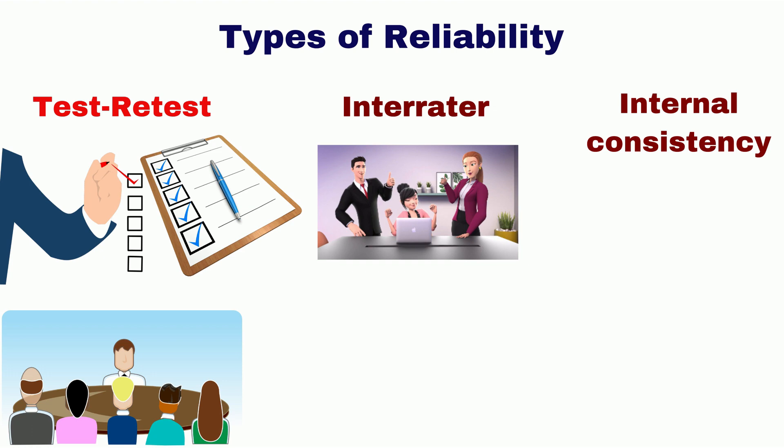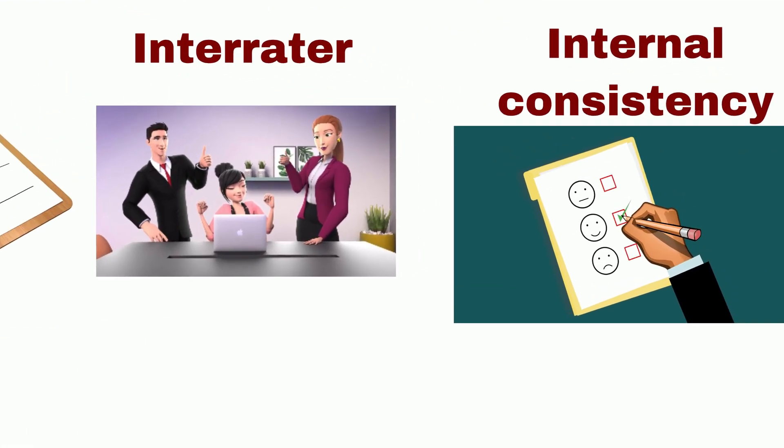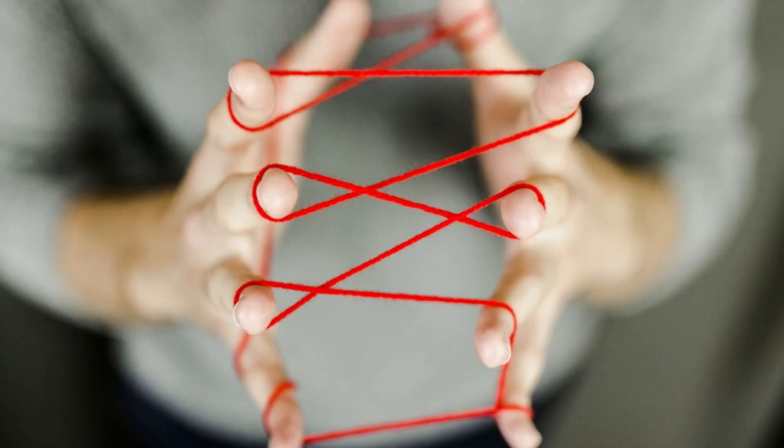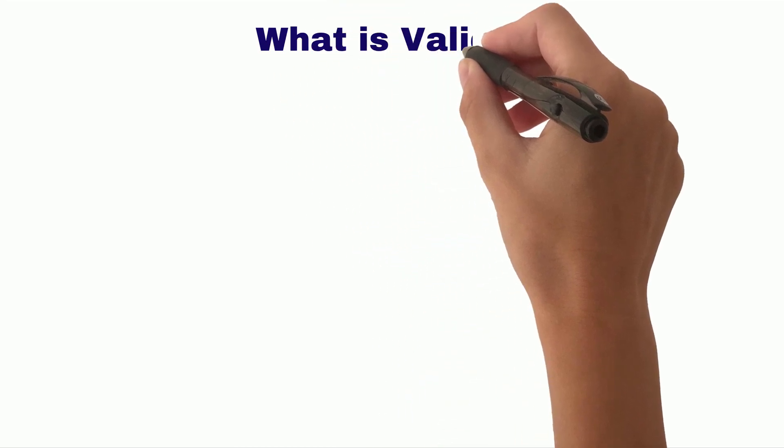For example, you designed a questionnaire to measure privacy concerns and randomly split the questionnaire into two halves. There should be strong correlation between these two halves. The next measure of quality is validity.